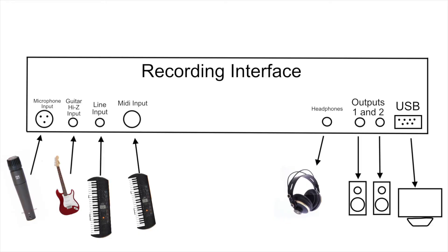The entire next lesson is about send and returns. Here's a picture showing the common inputs and outputs of a recording interface. Going from left to right: first we have the microphone input — you plug a microphone in there and it routes the signal into the preamp, then to the converter, then to the computer. Next is the high Z input — you plug your guitar in there and it goes into the preamp, then to the converter. Then we have the line input — in this example a keyboard is plugged in, going from the analog output of the keyboard into the line input of the interface.